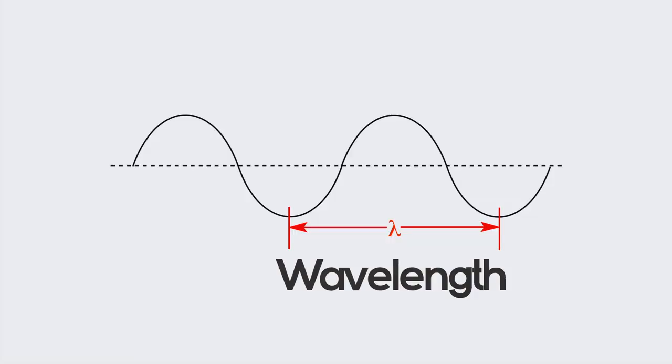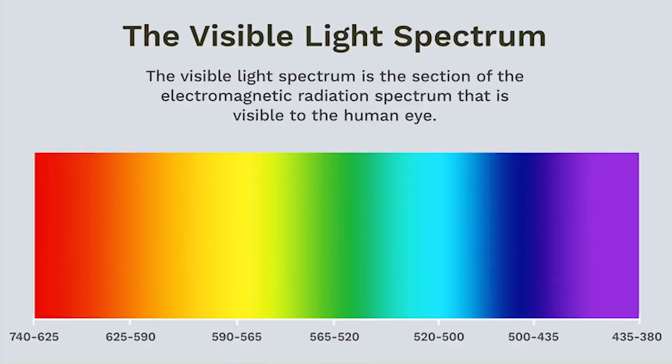We first have to understand how we see color in the first place and how we differentiate between them. Colors are mainly determined by their wavelength. Visible light sometimes acts as a wave and sometimes acts as a particle. When it does act as a wave, it has a wavelength. The wavelength of the light wave that hits your retina determines which color you see. For example, red has a wavelength of 680 nanometers, while brown has a wavelength of around 600.